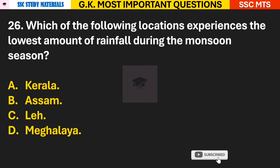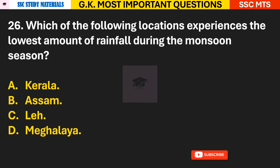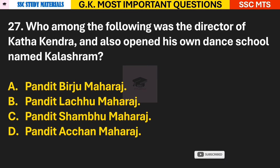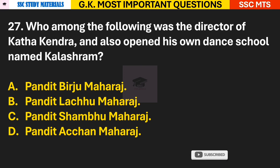Question 26: Which of the following locations experiences the lowest amount of rainfall during the monsoon season? Answer C — Leh. Question 27: Who among the following was the director of Kathak Kendra and also opened his own dance school named Kalashram? Answer A — Pandit Birju Maharaj.